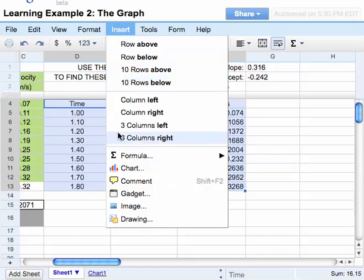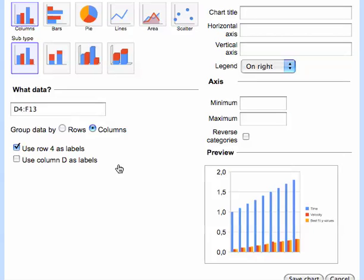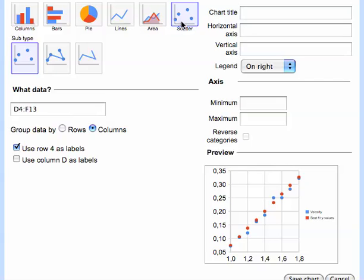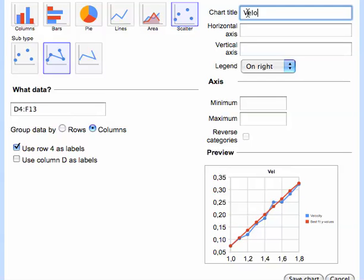Then I'll go to Insert, Chart. I'm going to choose a scatter plot. Connect the dots with the lines. And now I can do the titles. This is Velocity versus Time.